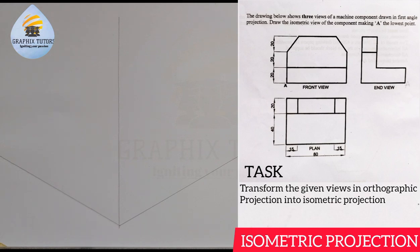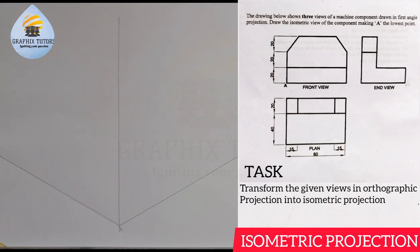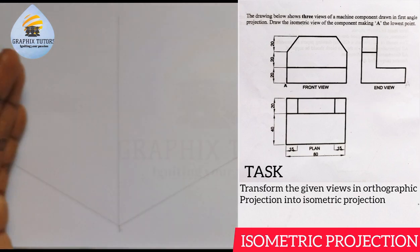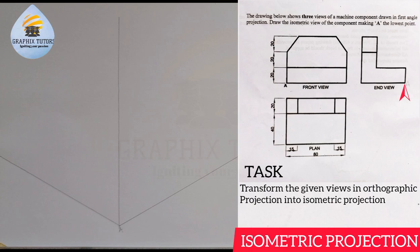A is the lowest point. This is A here, meaning these are our lowest points. Whatever we are doing, this point on the figure must be at point A. The end view makes us understand what direction the figure is facing — it is facing this direction. This point here toward A, and here also toward A, so the length of the end view from here to here is always the height of the plan.